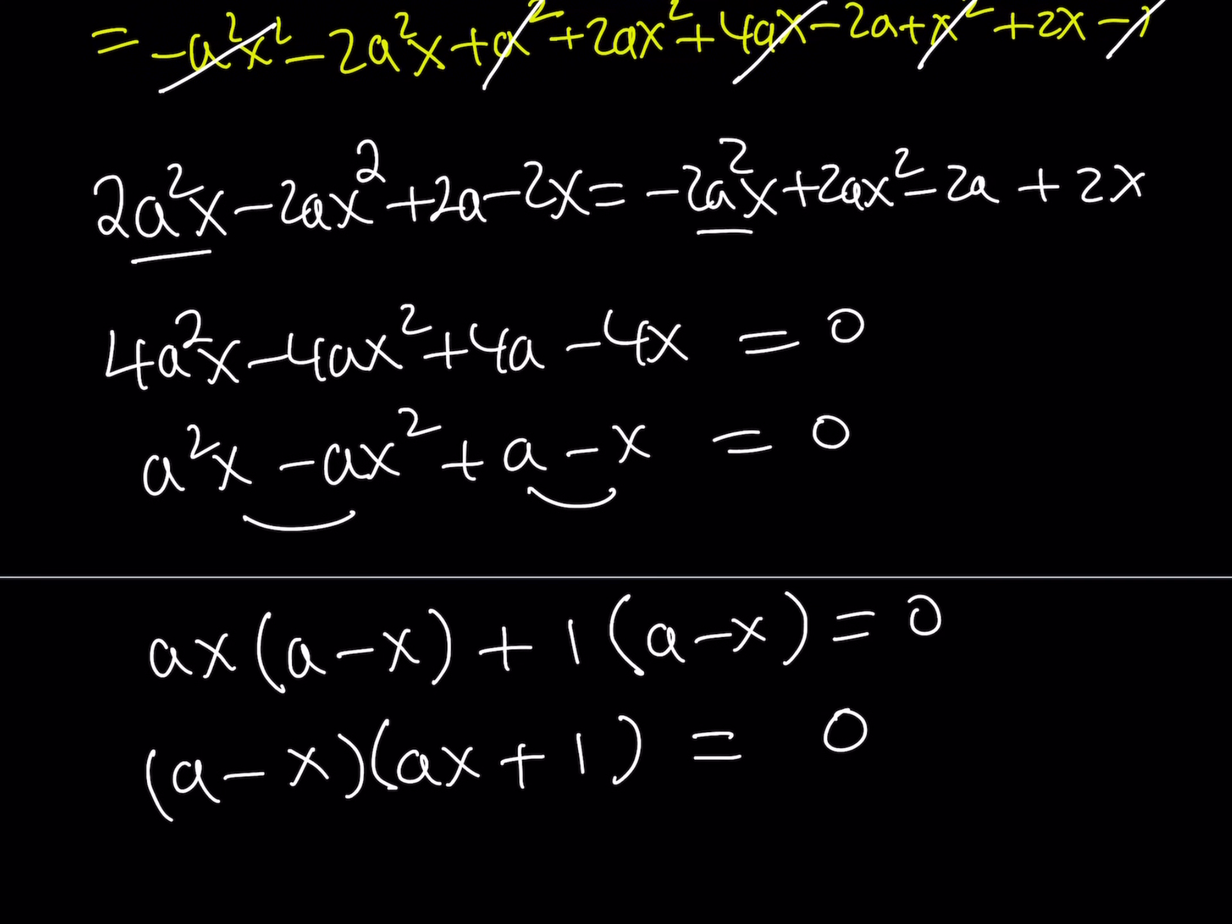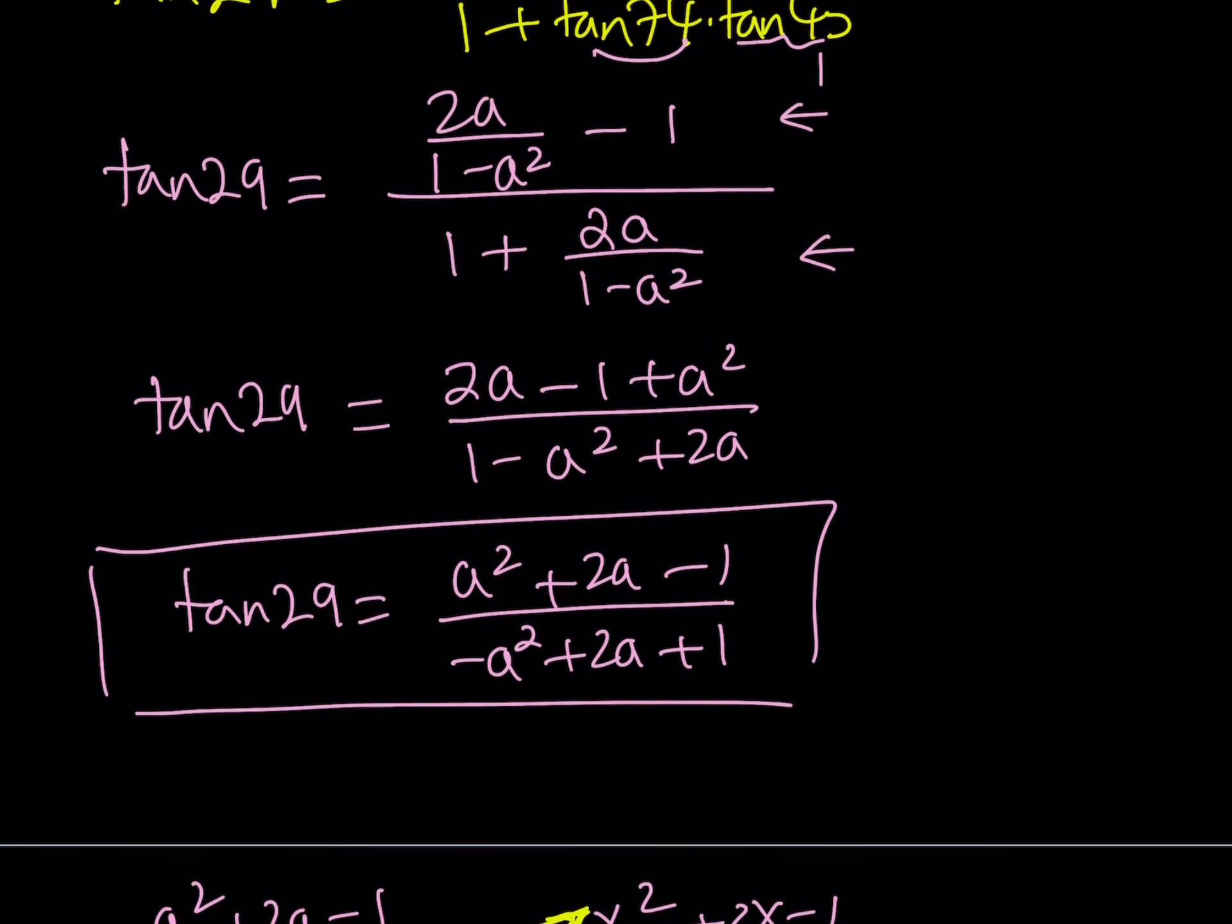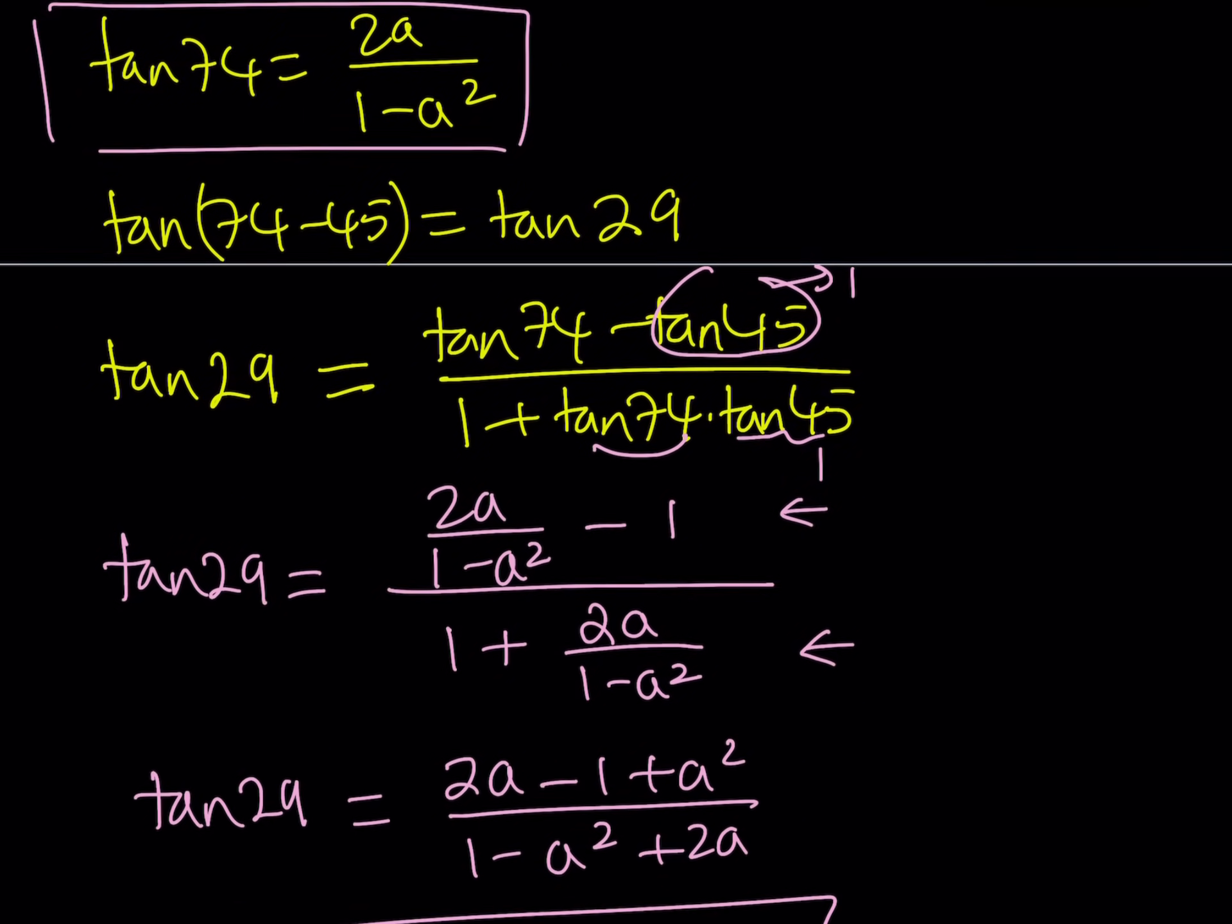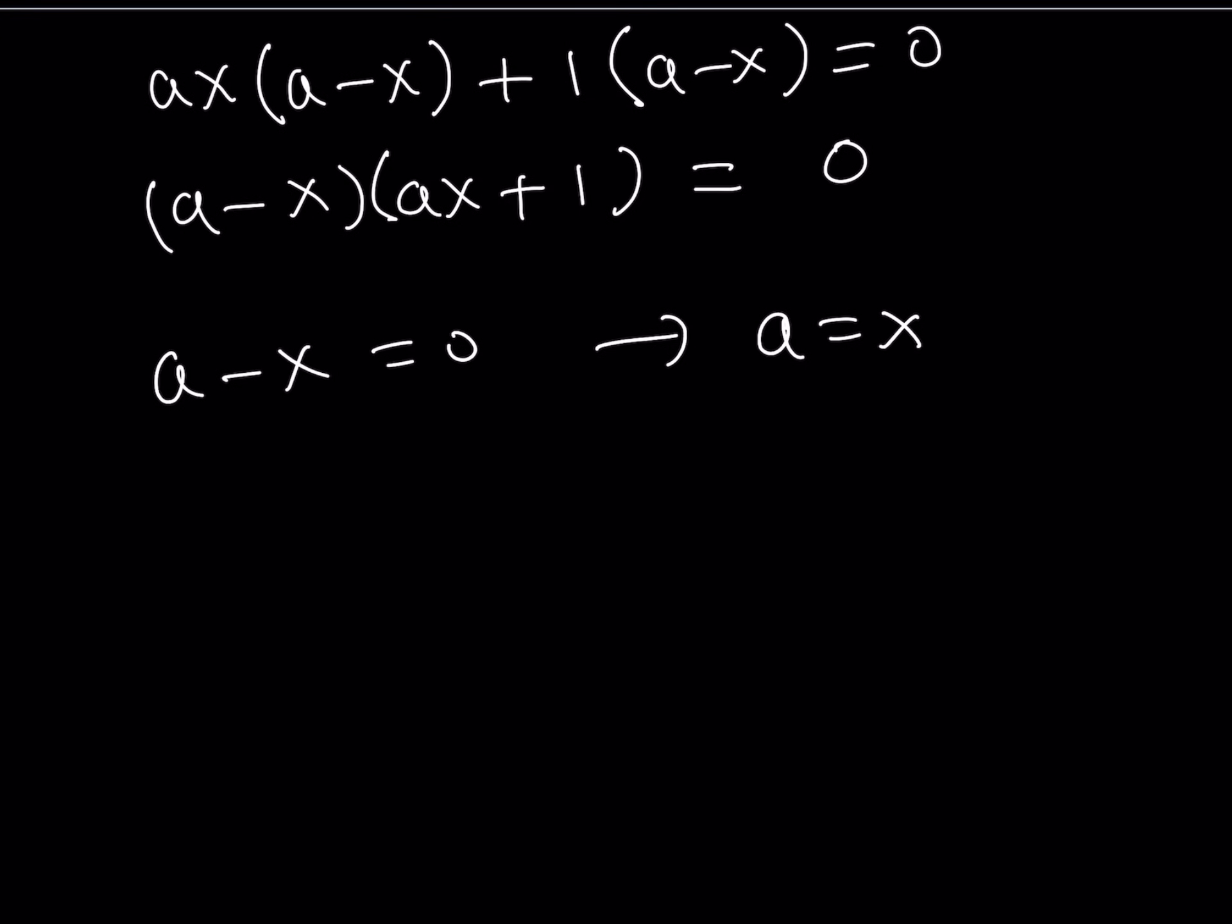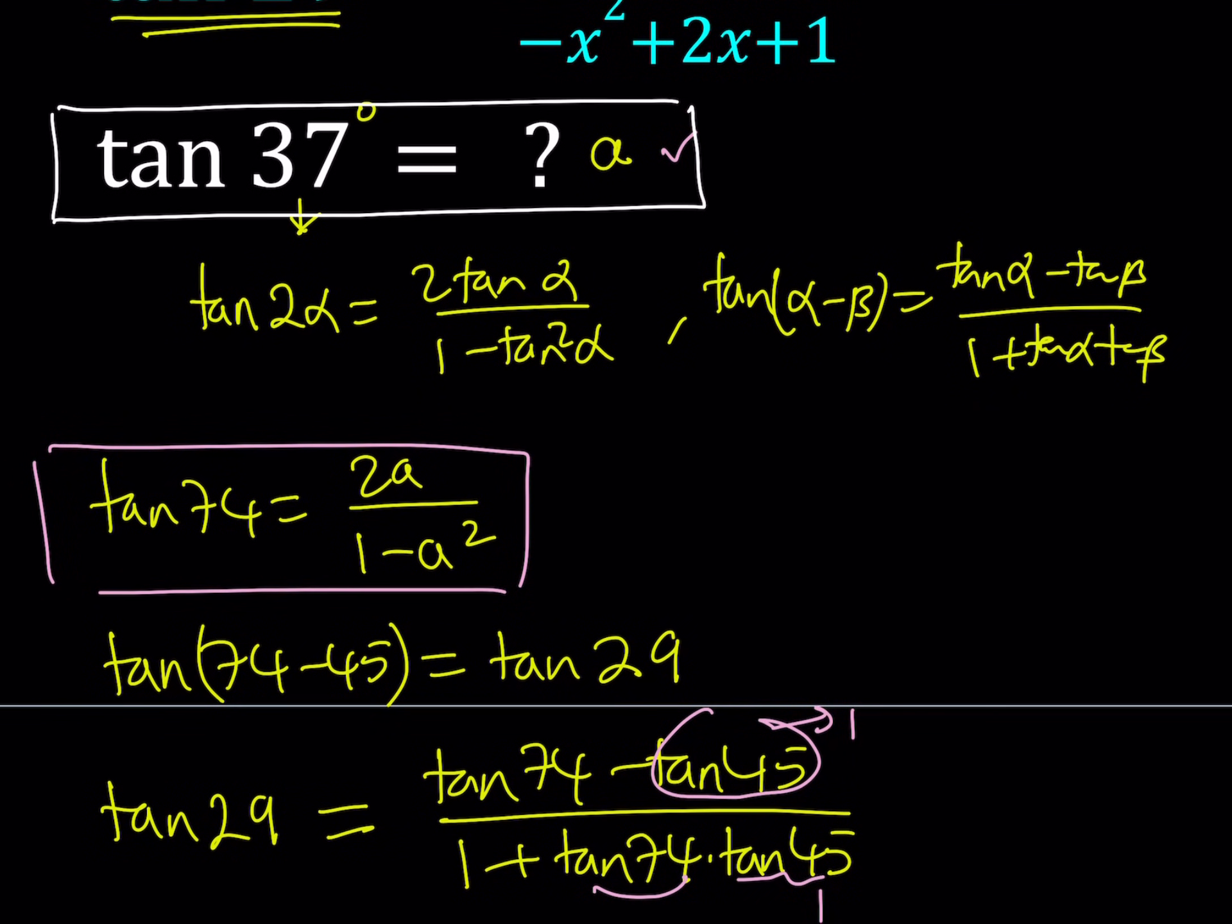So now we have a product. And using the zero product property, we can solve for a. Are we solving for a or x? Remember, the question was finding tangent 37 in terms of x. So we're basically solving for a here. And the answer is going to be in terms of x. Let's go ahead and do it. Setting the first factor equal to 0, a minus x equals 0 gives us a equals x. So that's one of the values. And the second one gives us ax plus 1 equals 0. From here, a becomes negative 1 over x. Obviously, x is not going to be 0 and a is not going to be 0, because those are the values for the given expression. a is going to be tangent 37.